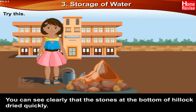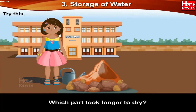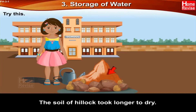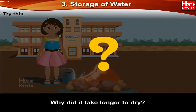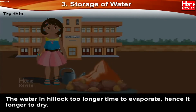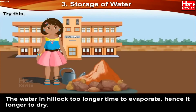You can see clearly that the stones at the bottom of the hillock dried quickly. Which part took longer to dry? The soil of the hillock took longer to dry. Why did it take longer to dry? The water in the hillock took longer time to evaporate, and hence it took longer to dry.